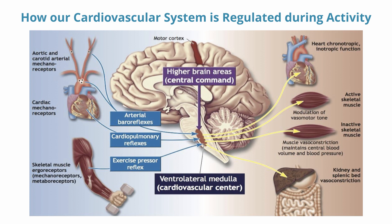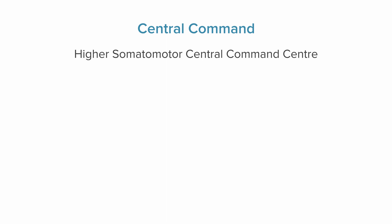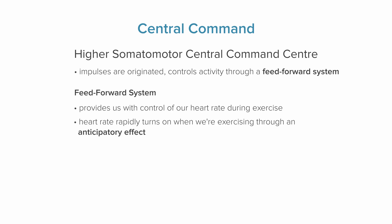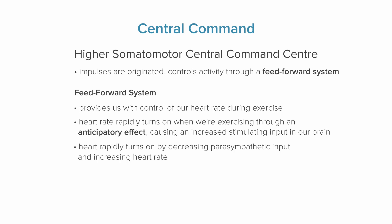During exercise, we focus on delivering blood to our active muscles. Another way we regulate heart rate and blood transport during exercise is through central command. The higher somatomotor central command center in our brain is where impulses originate, controlling activity through a feed-forward system. This system provides most control over heart rate during exercise — our heart rate rapidly turns on through an anticipatory effect, decreasing parasympathetic input and increasing heart rate before any receptor signals are received. For example, if you're about to sprint, your heart rate may already be elevated on a monitor before you even begin, as the body prepares for the expected response.